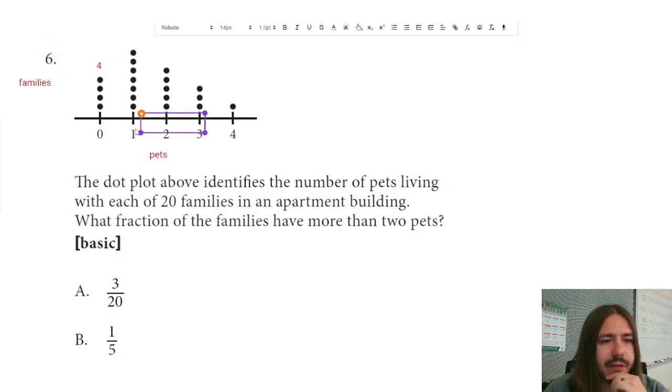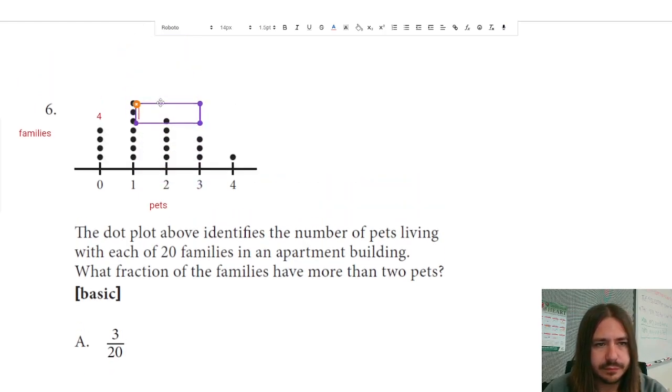The families that have one pet: one, two, three, four, five, six, seven. Looks like there's seven of them. Families with two pets: one, two, three, four, five. Families with three pets: one, two, three. And four pets, a lot of pets, there's just one family.